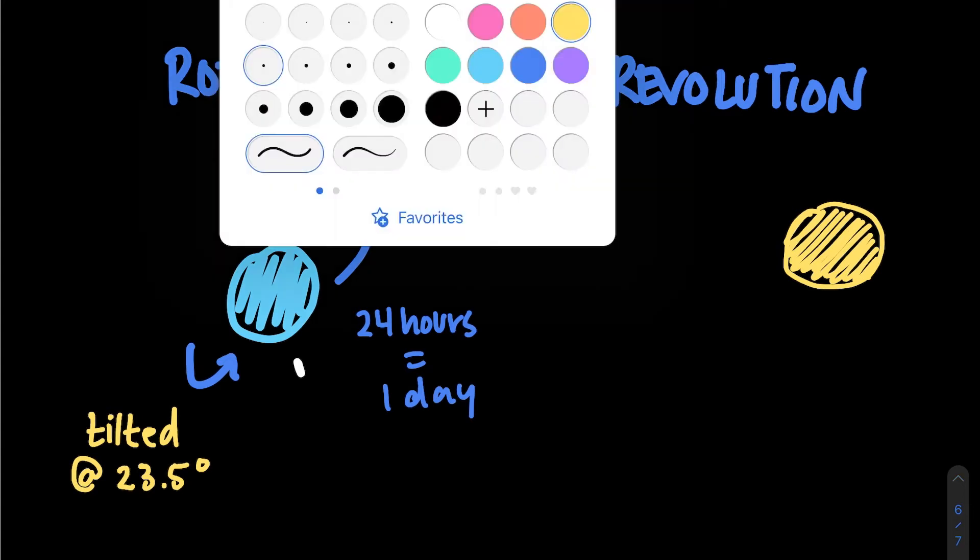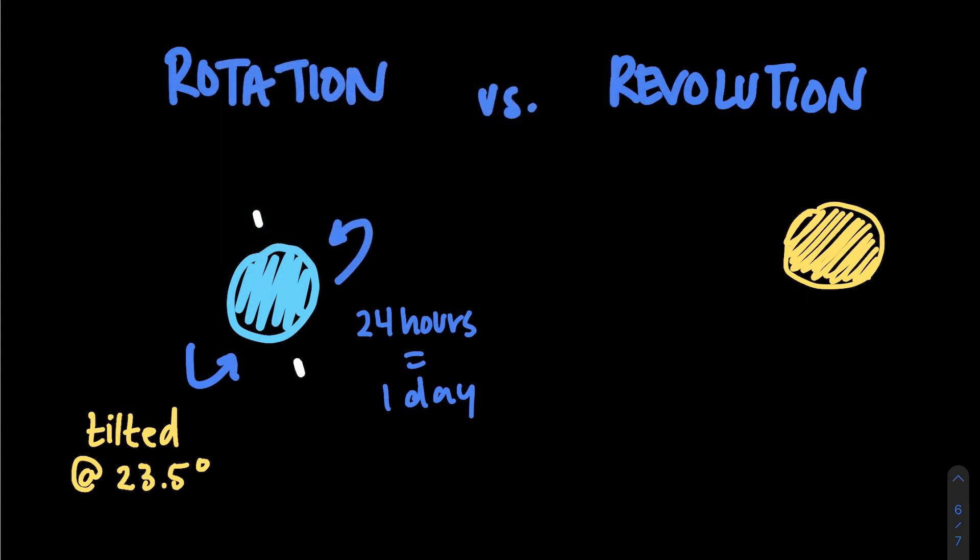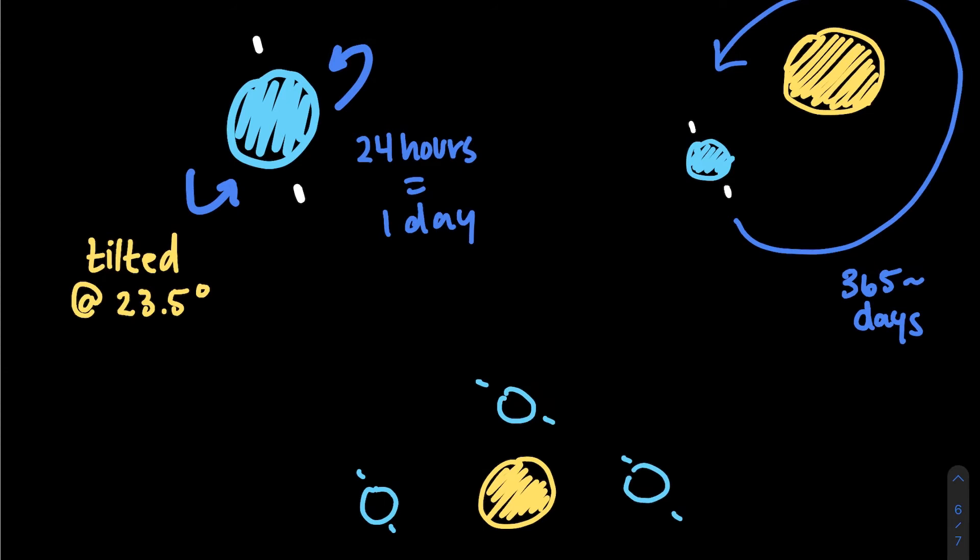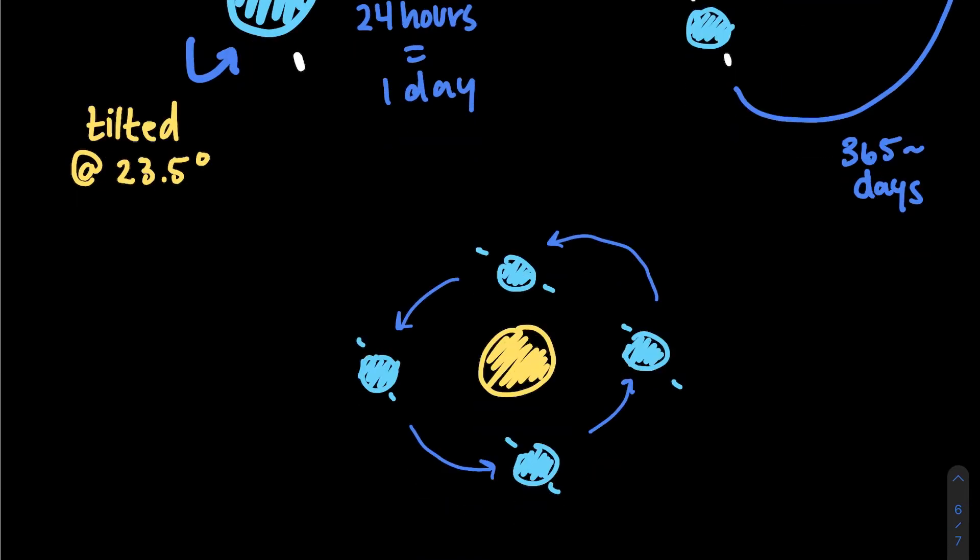Earth also experiences revolutions, like a revolution like a spinning tire or a bike wheel, when moving or orbiting around the sun. So each revolution around the sun represents 365 days on Earth. Imagine Earth revolving around the sun. This could be split up into four equal sections, or what we refer to as seasons.